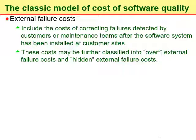Overt external failure costs also include costs incurred on correction of software failures after the warranty period is over, even if the correction is not covered by the warranty. Additionally, damages paid to the customer in case of severe software failure detected during regular operations, or reimbursement of the customer's purchase costs, are also considered overt external failure costs.